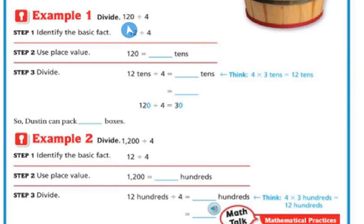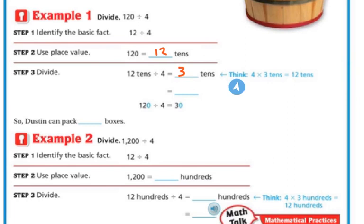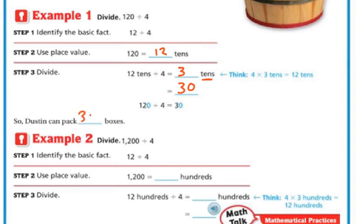For example, if I divide 120 by 4, step one is to identify the basic fact, which is 12 divided by 4. Then I can use place value — 120 is actually 12 tens. So step three is divide: 12 tens divided by 4 is 3 tens, because 4 times 3 tens is 12 tens. And 3 tens is 30. So Dustin packed 30 boxes because 120 divided by 4 is 30, just like when we were doing multiplication using place value.